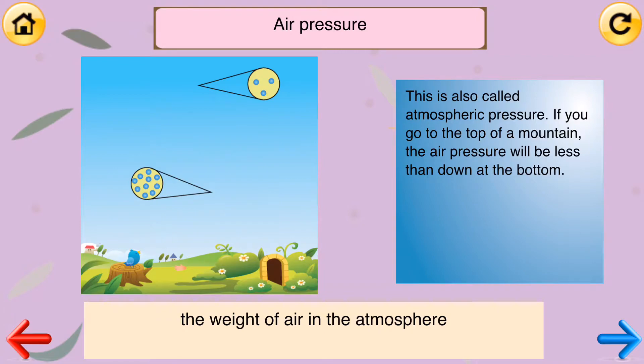Air pressure. The weight of air in the atmosphere. This is also called atmospheric pressure. At the top of a mountain, the air pressure will be less than at sea level.